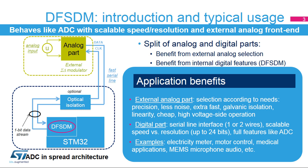The digital part, represented by the DF-SDM peripheral, processes digital signals from external data. It offers a scalable ratio solution between speed and resolution, as well as analog functionality integrated in a standard built-in ADC, including analog watchdogs, injected and regular conversions, flexible triggering system, brake signal generation, and extreme detector.